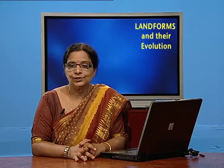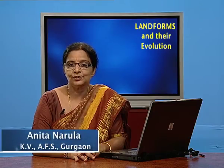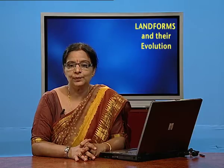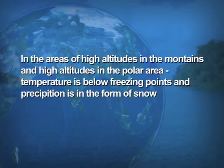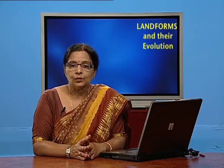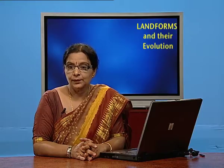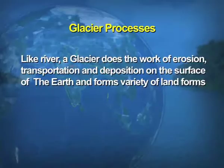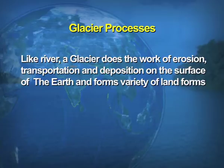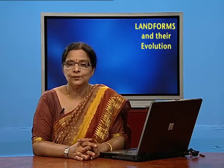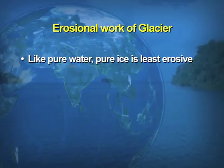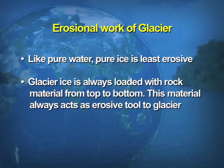In areas of high altitudes in the mountains and high latitudes in the polar areas, the temperature is below the freezing point and precipitation is in the form of snowfall. Like a river, a glacier does the work of erosion, transportation, and deposition on the surface of the earth, forming a variety of landforms. Pure ice is least erosive, but glacier ice is always loaded with rock material from top to bottom, which acts as an erosive tool.